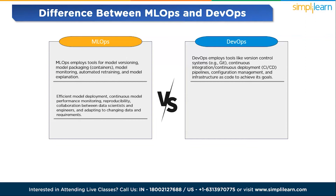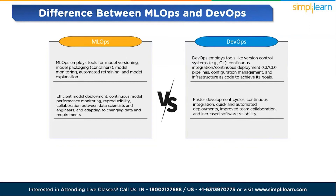The key goals of MLOps include efficient model deployment, continuous model performance monitoring, reproducibility, collaboration between data scientists and engineers, and adapting to changing data and requirements. DevOps goals include faster development cycles, continuous integration, quick and automated deployment, improved team collaboration, and increased software reliability. In summary, while DevOps and MLOps share concepts of automation, collaboration, and continuous improvement, DevOps has a broader focus on software development and deployment, while MLOps is tailored to the specific challenges of deploying and managing machine learning models in production settings.